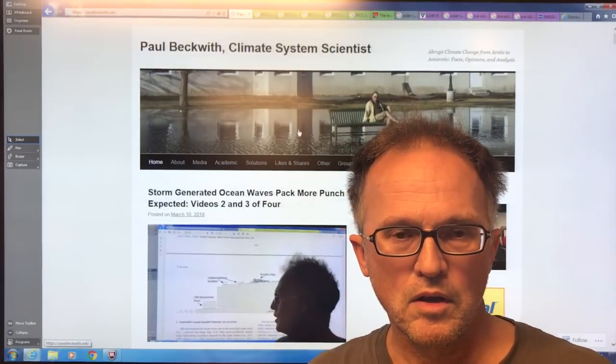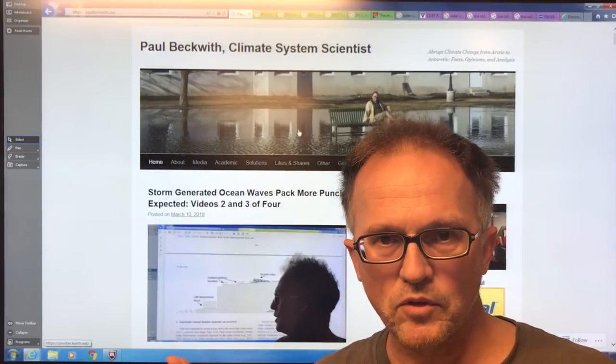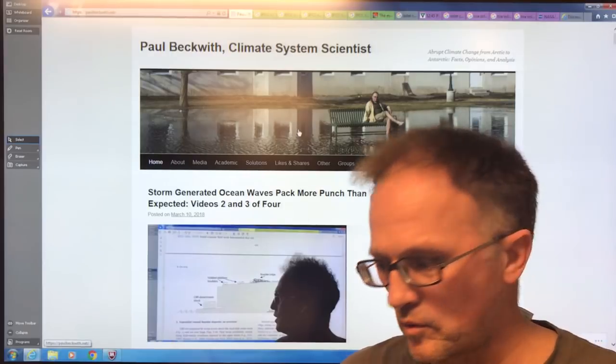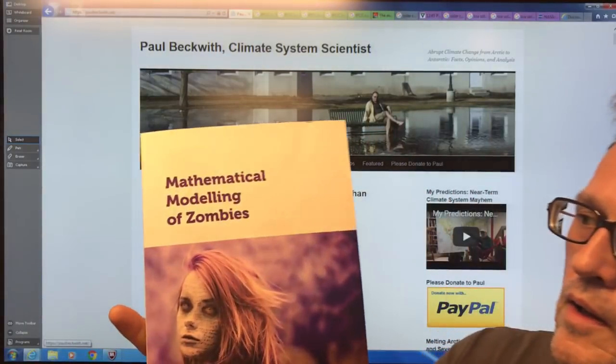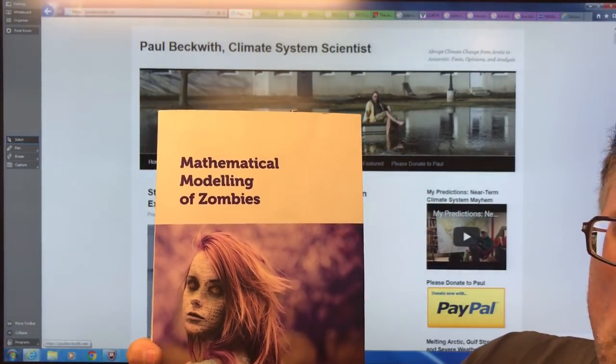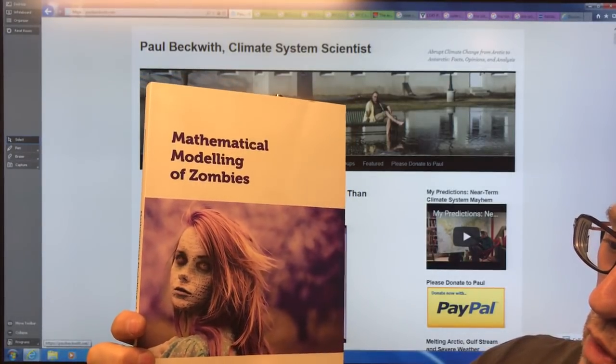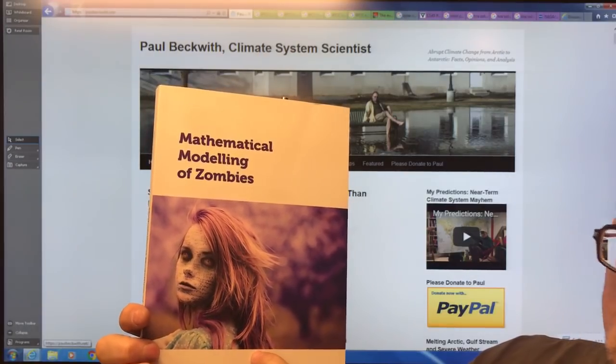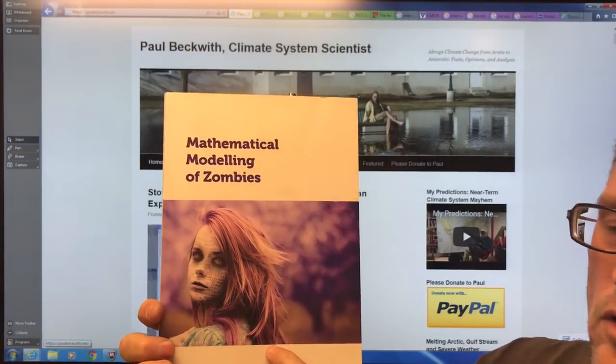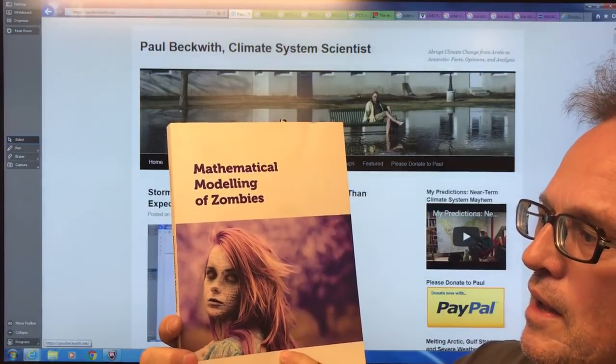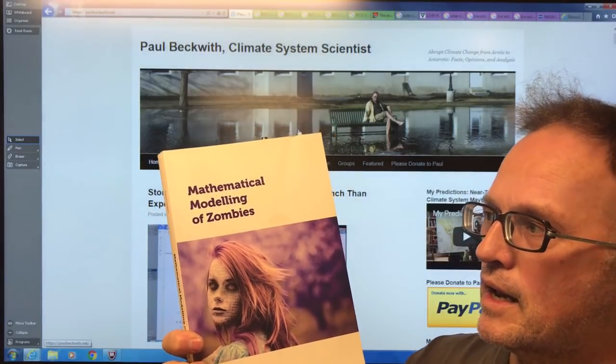One interesting thing is to figure out the motivations behind people who have these cockamamie ideas. I came across this book at the University of Ottawa bookstore: Mathematical Modeling of Zombies by Robert Smith question mark. His last name is Smith with a question mark. This modeling was done a few years ago at University of Ottawa and it went viral, pun intended.